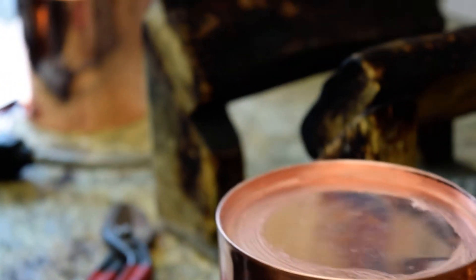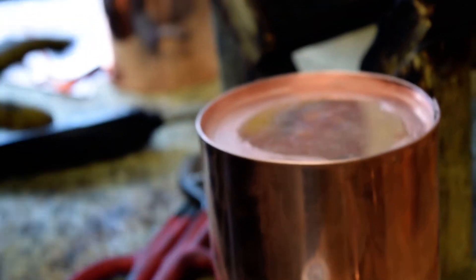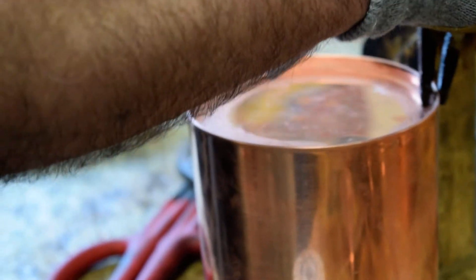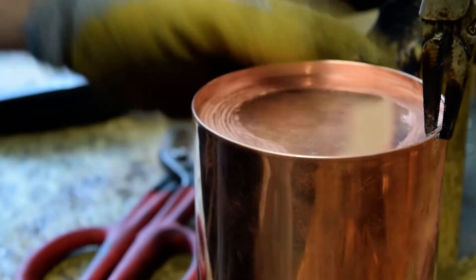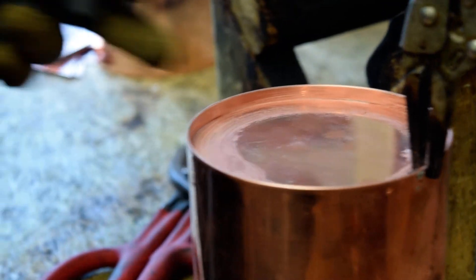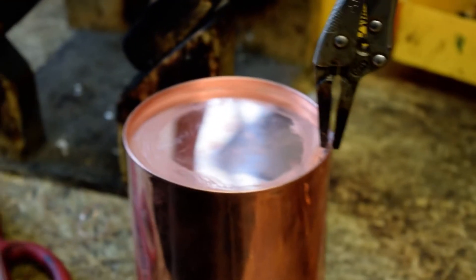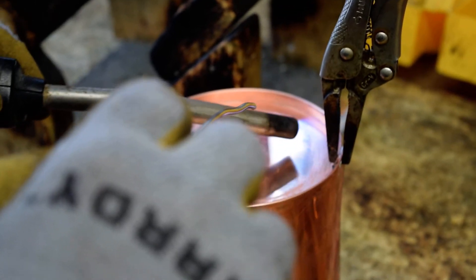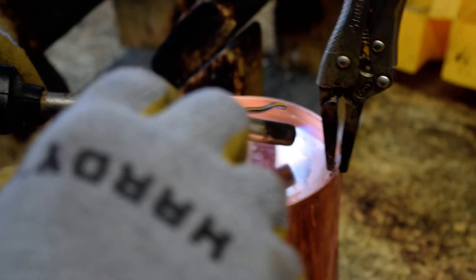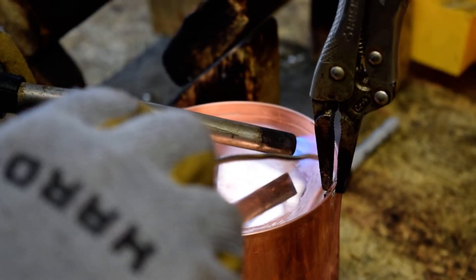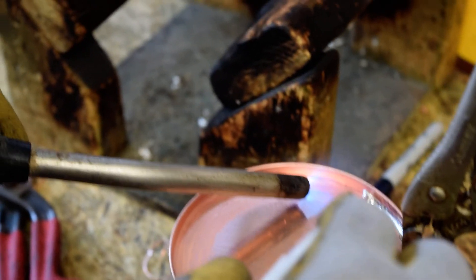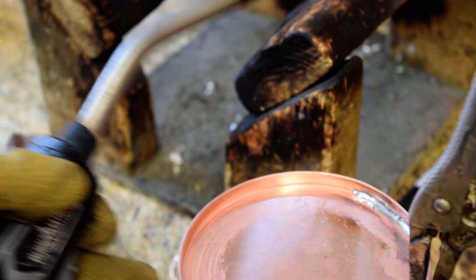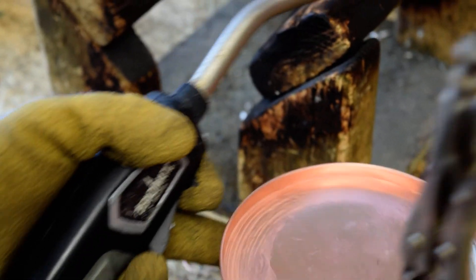Flux it. Watch how Bobby heats up the copper first and he's not even putting the solder in. He's letting the copper melt the solder. Heating up the copper first, he's not touching the copper, not touching the copper at all. Alright, finally he's starting to touch the copper.